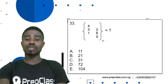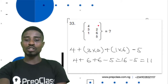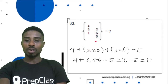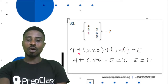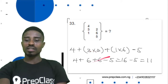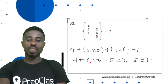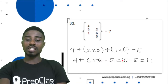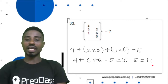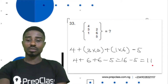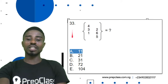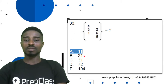For question 33, since there's no number beside the first value it becomes: 4 plus (3 times 2) in brackets plus (6 times 1) in brackets minus 5. Three times 2 is 6, six times 1 is 6, then minus 5. So 4 plus 6 is 10, plus 6 is 16, minus 5 equals 11. Question 33, option A: 11 is our correct answer.